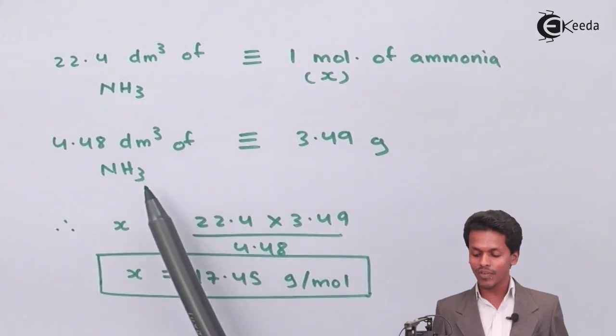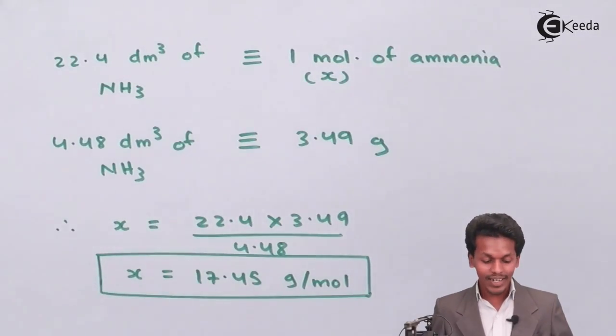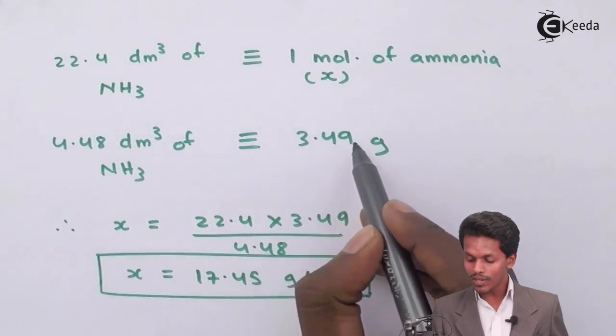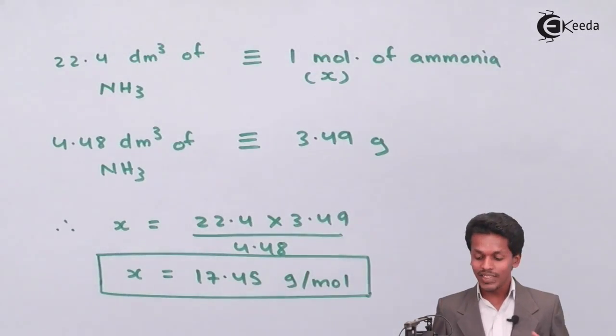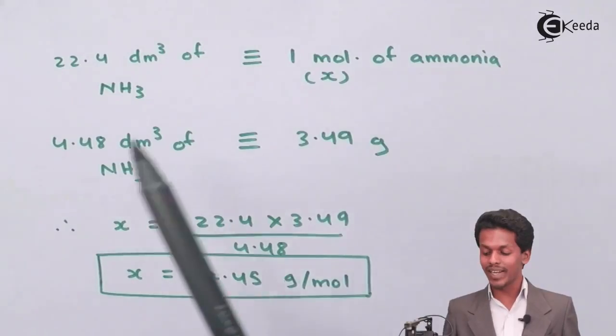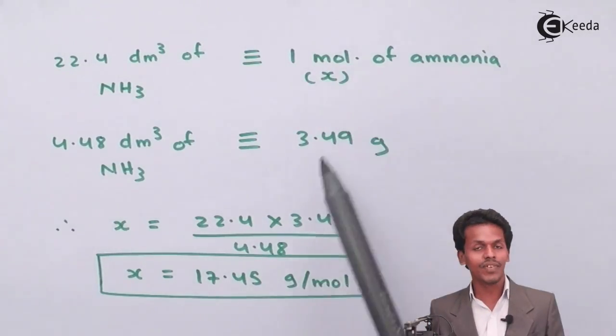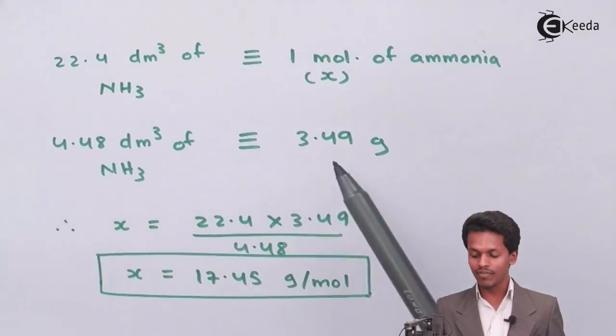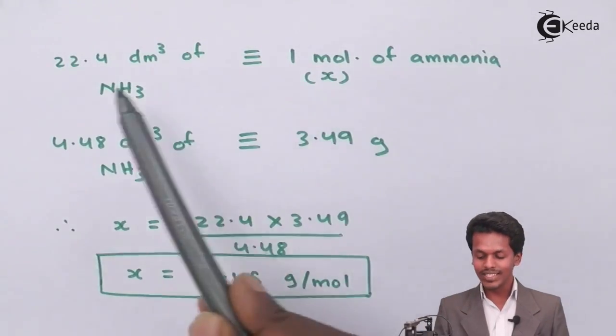4.48 dm³ of ammonia has been occupied or contains 3.49 grams of ammonia. We don't know what would be the molecular weight of that particular compound, so from this we can easily calculate by taking the molecular weight as if we have equated it with grams. Therefore, we could easily calculate the molar mass of that particular substance.